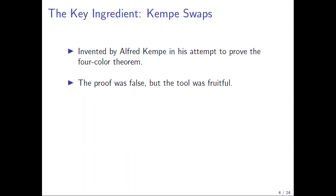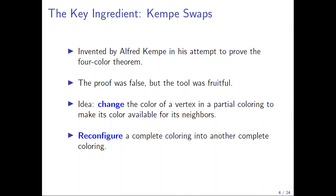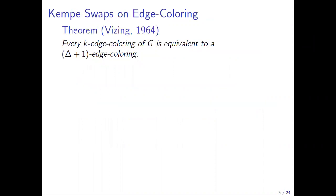The Kempe swap is based on a simple idea: when coloring a graph vertex by vertex, at some point you need to backtrack by changing the color of some vertices to make a color available for a neighbor. This idea of Kempe is really an idea of reconfiguration — reconfiguring your coloring into another coloring so that you have an available color for some vertex you want to color. The same applies to edge coloring.